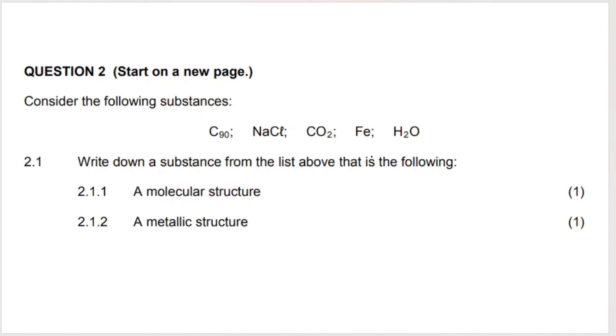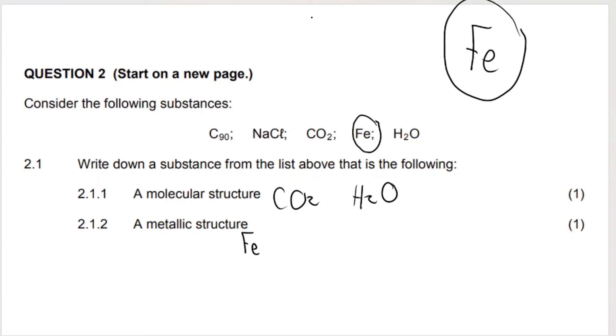Here's another example. They give you a bunch of substances over here. And they say, write down a substance from the list above that is the following. I've only screenshotted these two questions, a molecular structure. So that would be either CO2 or H2O. Those are molecules just for your information. Again, if you want more examples on this, look at the links in my description. And then a metallic structure. So we can look through the list and there is iron, that's the metal in the list. So metallic structure would have to be Fe. Fe, the metal, iron, contains metallic bonding within the structure.